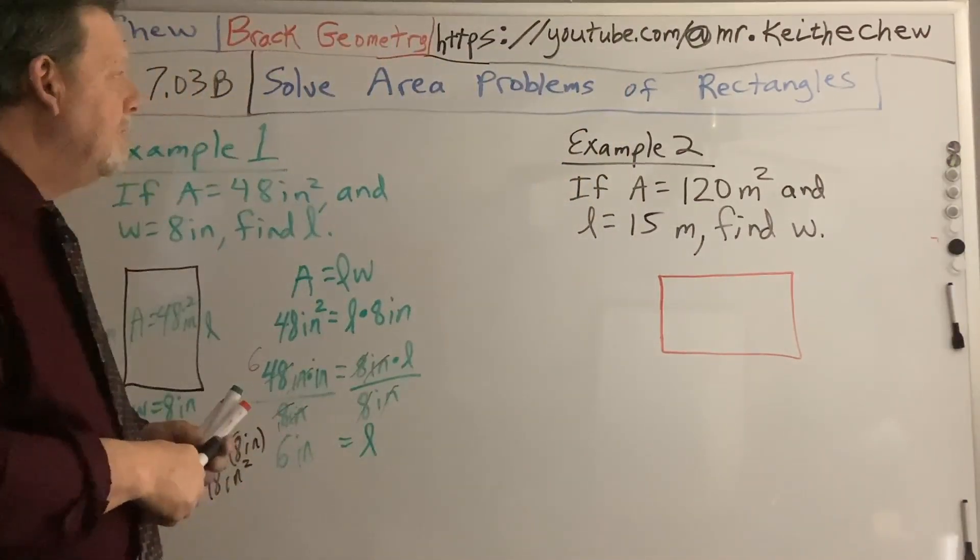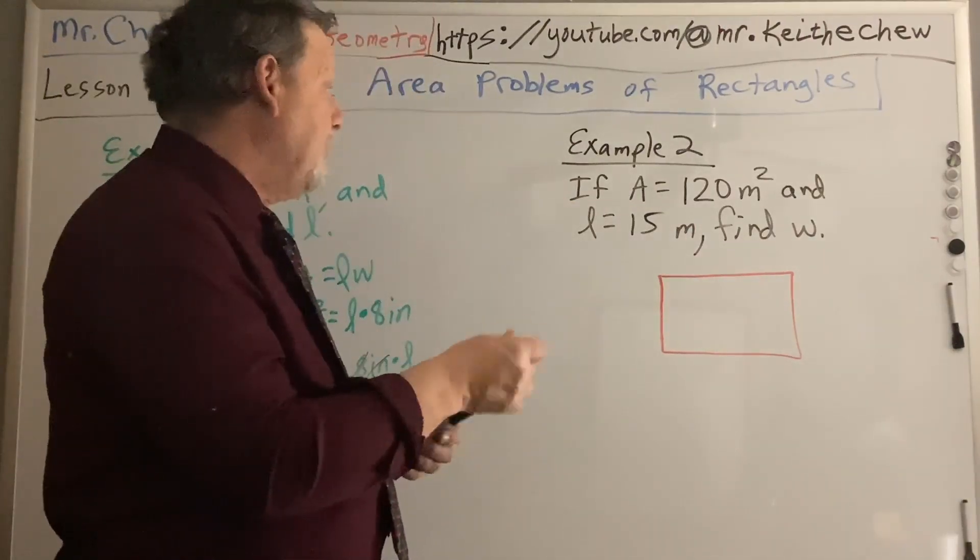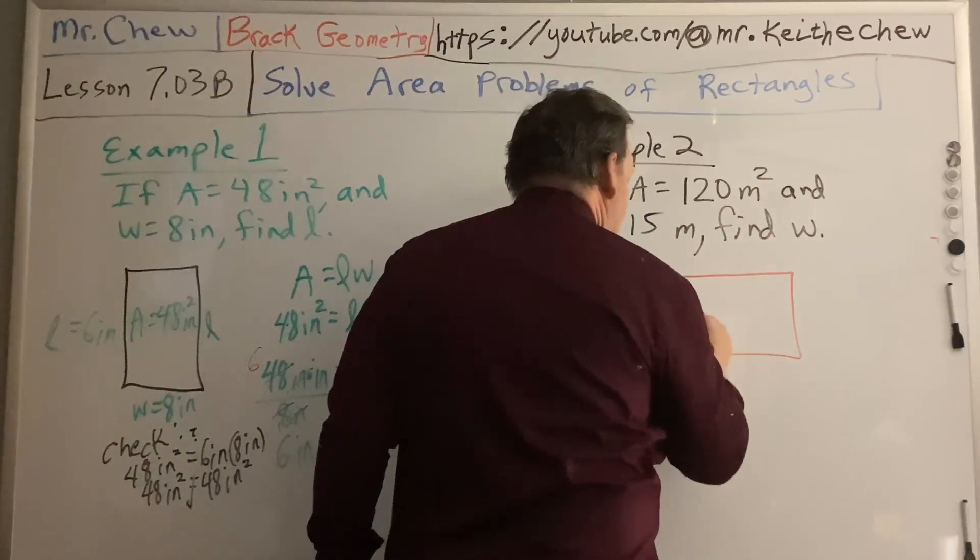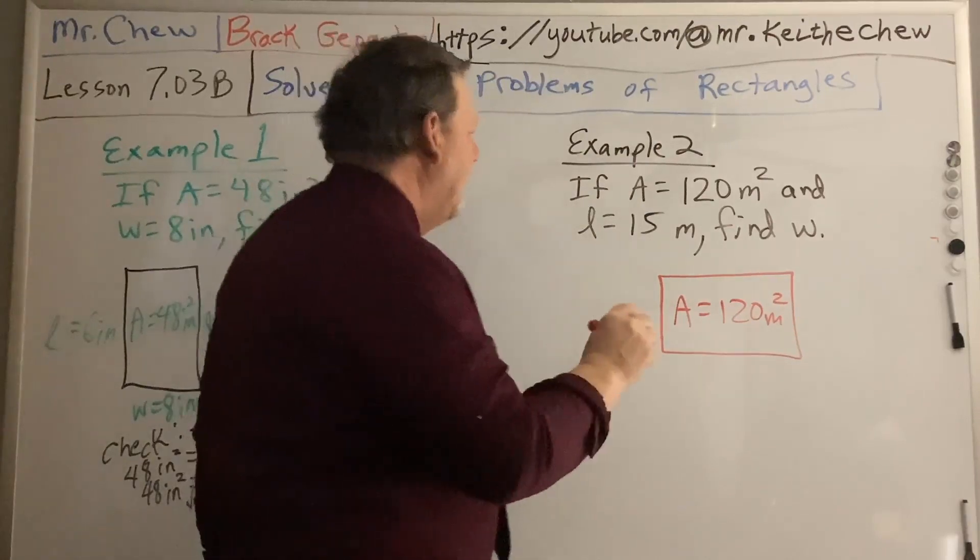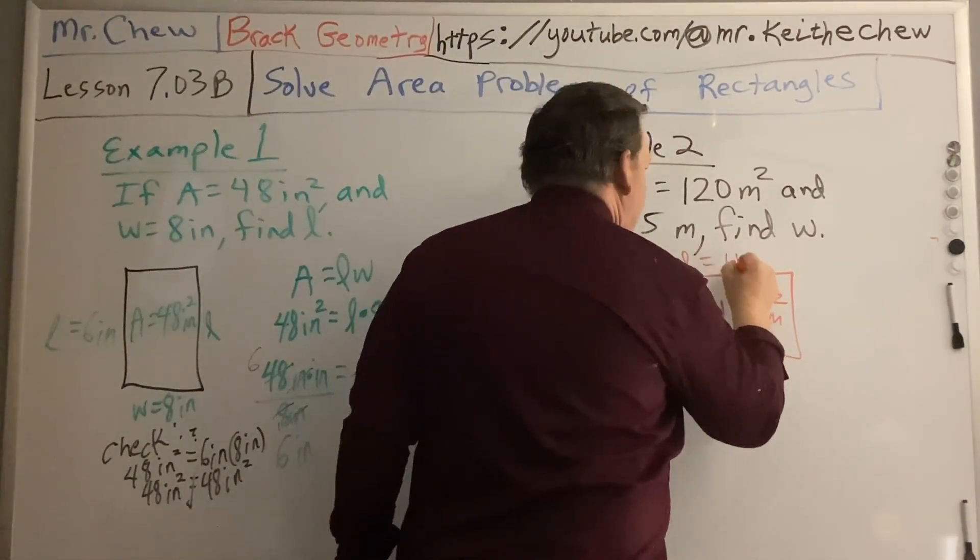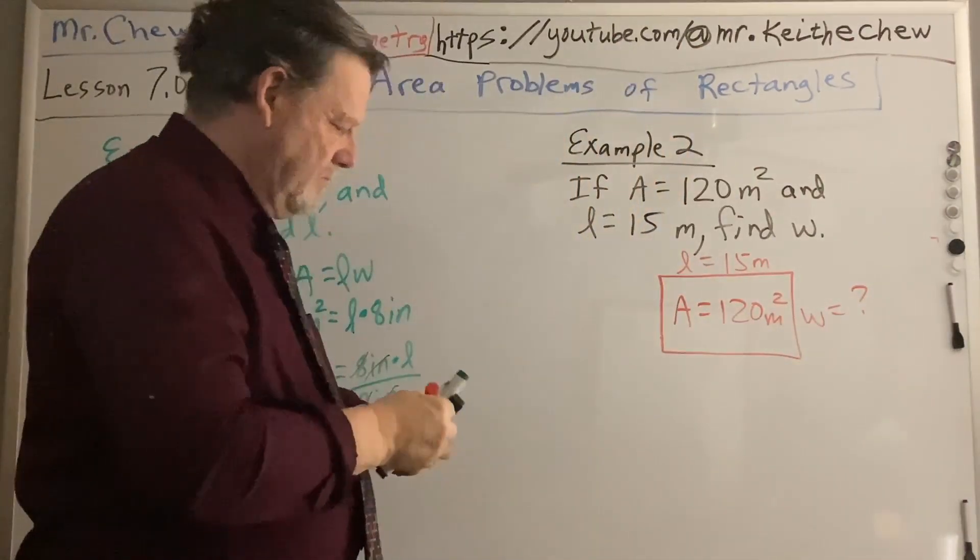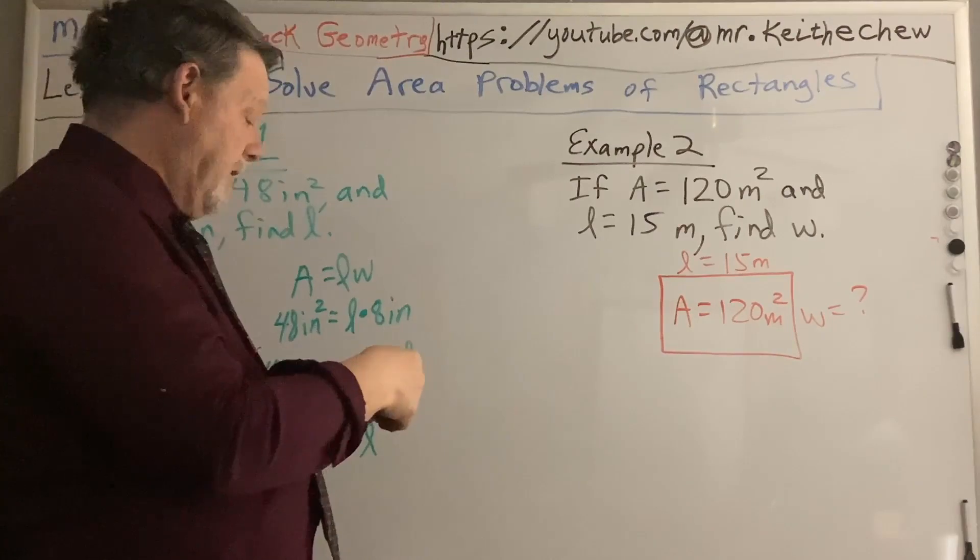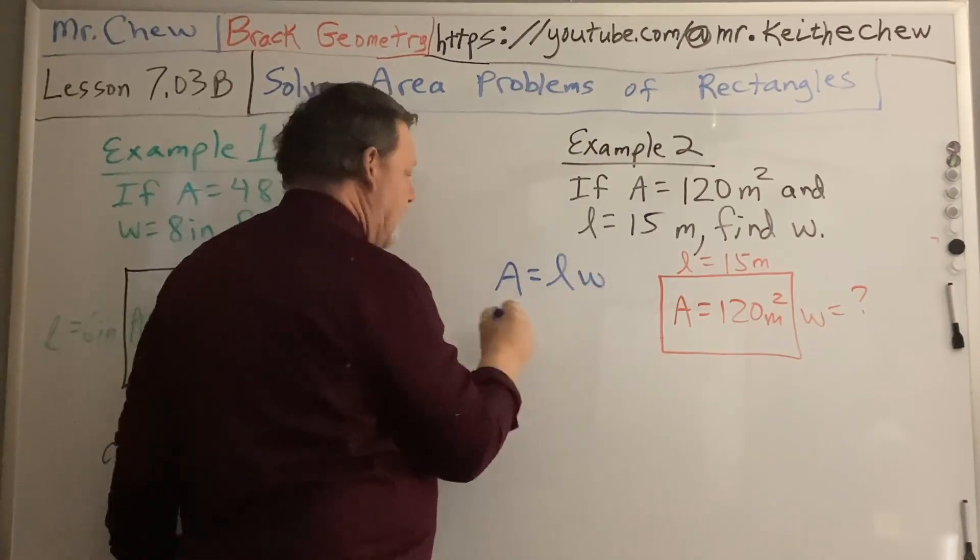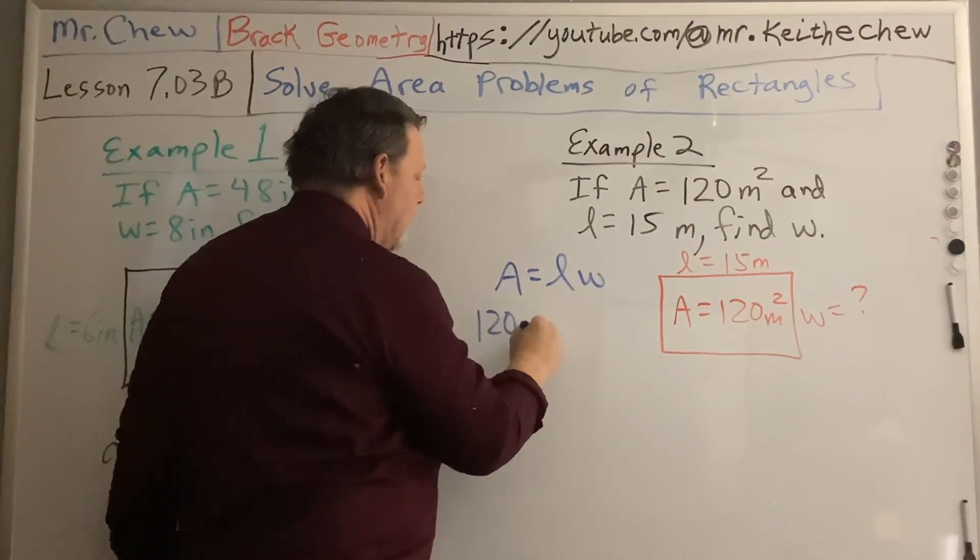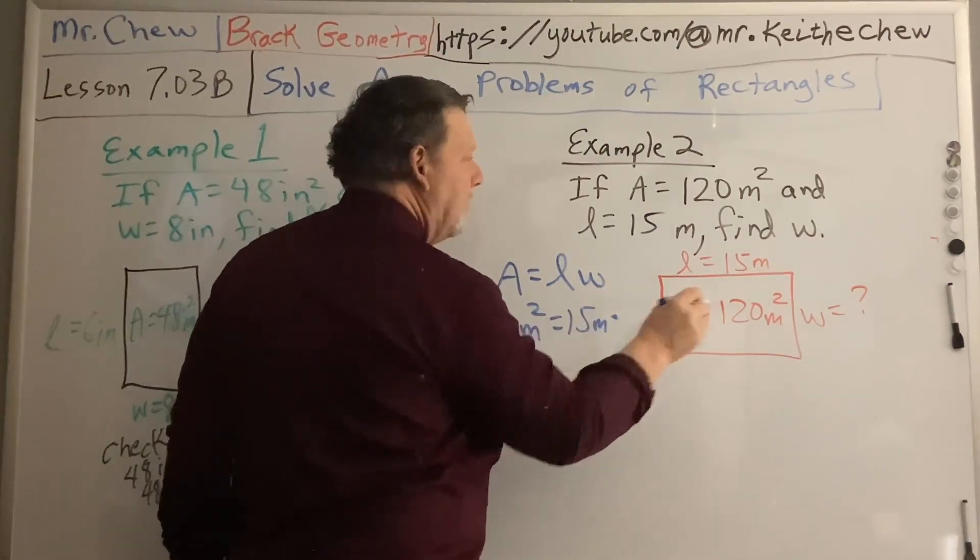Example 2 says that if my area of this rectangle is 120 meters squared, and my length is 15 meters, find the width. Alright, so we're going to take now and use our formula and substitute. So 120 meters squared equals 15 meters times W.